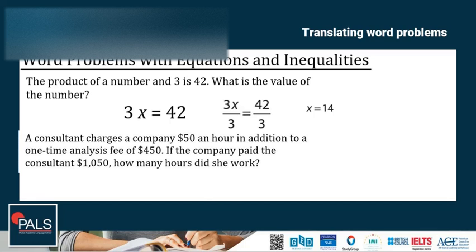Another example. A consultant charges a company $50 an hour in addition to a one-time analysis fee of $450. If the company paid the consultant $1,050, how many hours did she work? If h represents the number of hours worked, then the consultant's total charge is 50h plus 450. Because the total payment was $1,050, it must be that 50h plus 450 is equal to 1,050. $50 is being paid per hour, and $450 analysis fee is equal to $1,050.